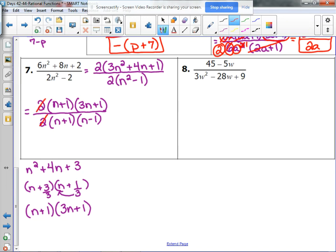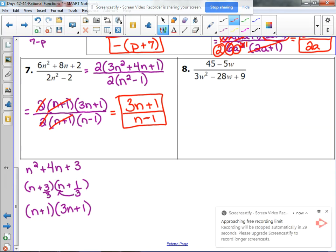So what can we cancel? We can cancel those 2's, we can cancel the n plus 1. We are left with 3n plus 1 over n minus 1. Nothing else cancels. We can't do anything with those 1's. That's as far as we can go. You can graph it to confirm.